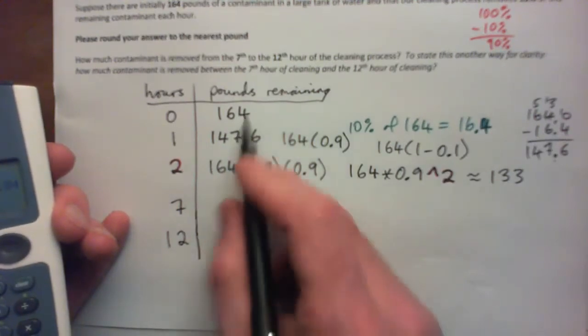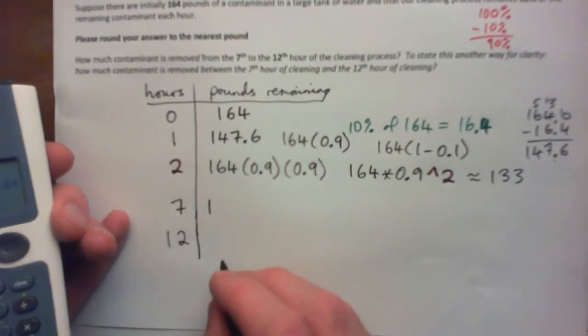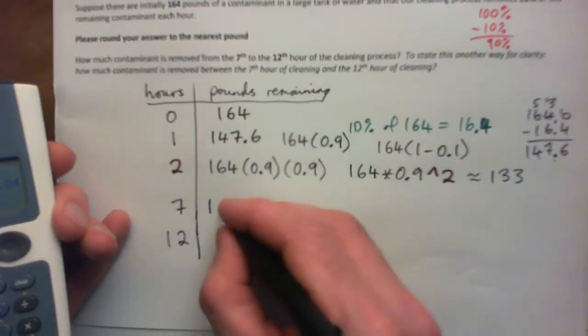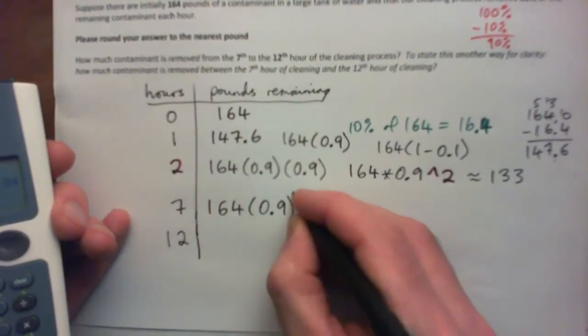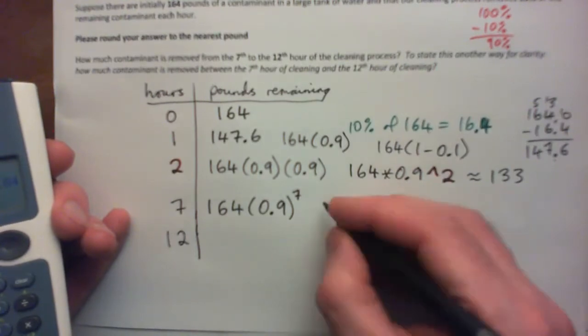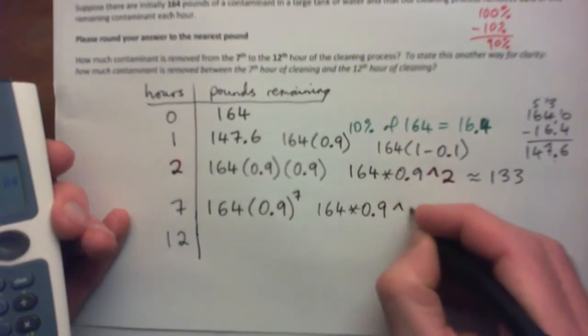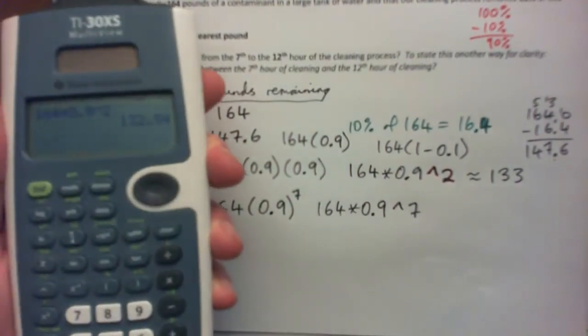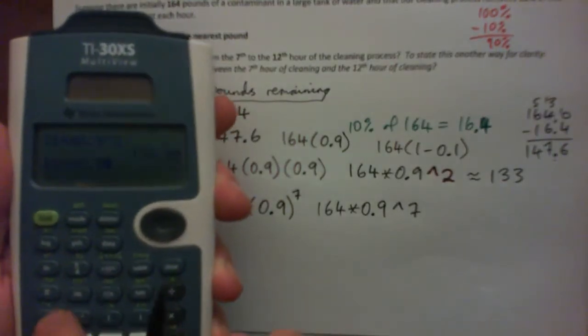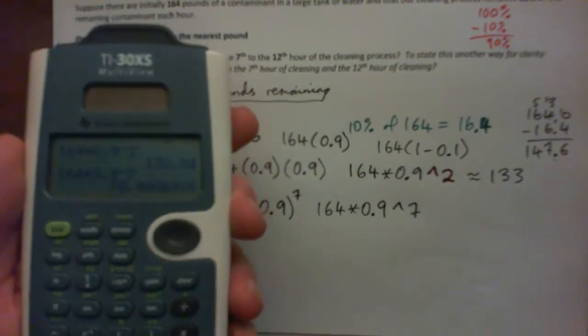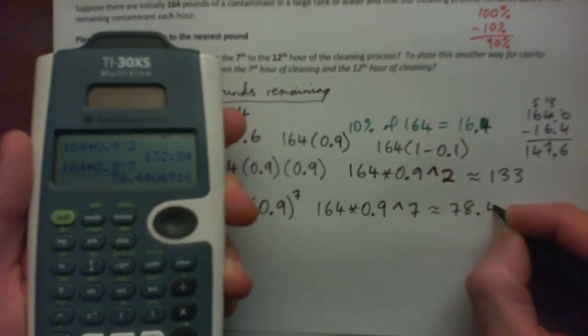So let's figure out what's remaining after the 7th hour. Can you press pause and do that? I'll do it with you now. So you go 164 times 0.9 to the power of 7. Or in calculator form it's 164 times 0.9 to the power of 7. And that's about 78.44 pounds.